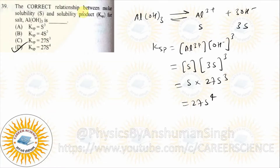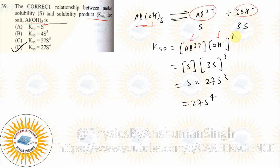The correct relation between molar solubility and solubility product for Al(OH)3. Since Al(OH)3 dissociates into Al³+ and 3OH-, giving 4 total ions, concentration of Al³+ is s and OH- is 3s. So Ksp = s × (3s)³ = 27s⁴. A generalized formula is given in your book.